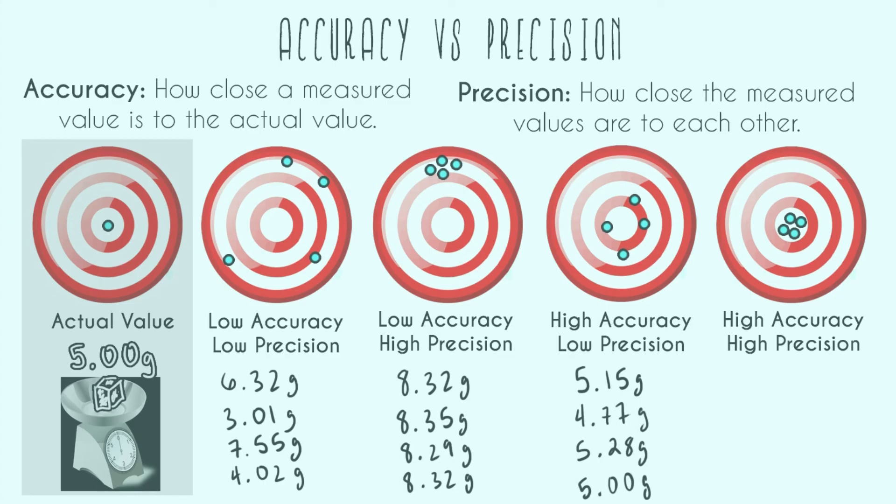So now let's do the only scale we want to use. It's going to be highly accurate and highly precise. So let's say our four values are something like this: 5.01 grams, 4.99 grams, 5.00 grams, and 5.00 grams.